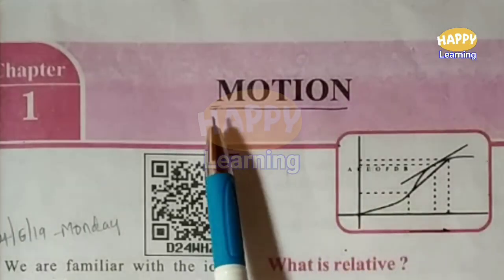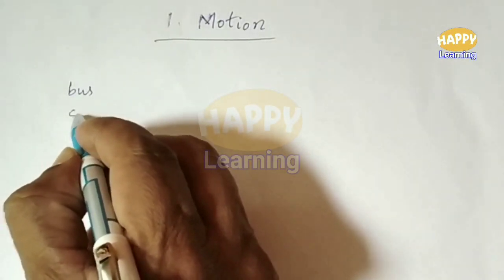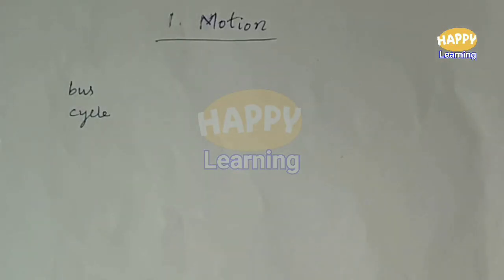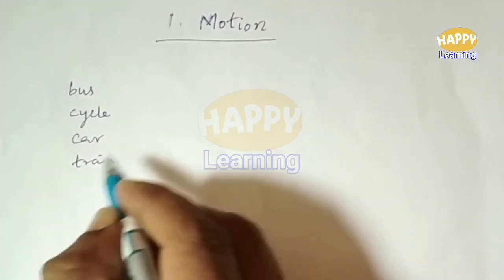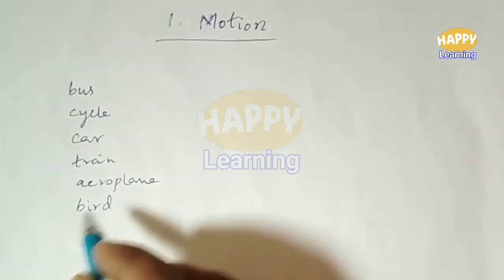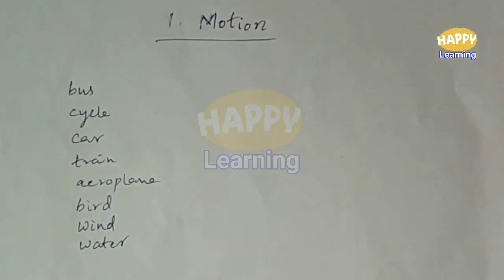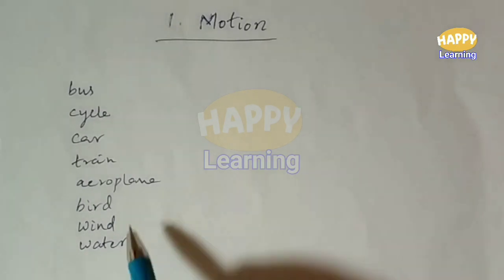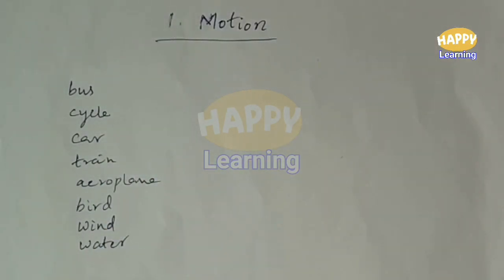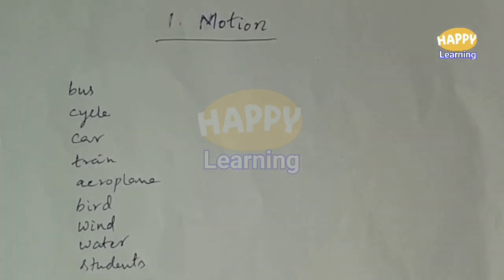Let us start the first chapter, Motion. We are regularly seeing bodies moving — a bus is moving, a cyclist is moving, a car moving, a train moving, an aeroplane moving, a bird flying. Wind is blowing means air particles are moving, water in the river is flowing, that means moving. We are regularly seeing many objects moving. Students during their break time are also moving here and there randomly. It is also motion.